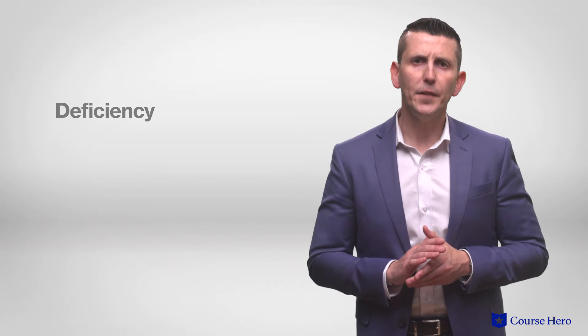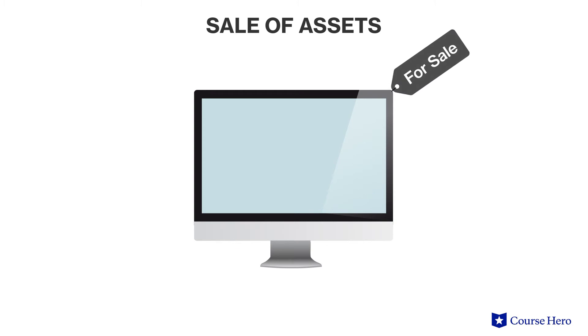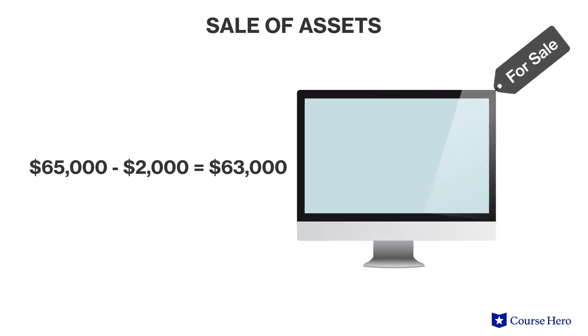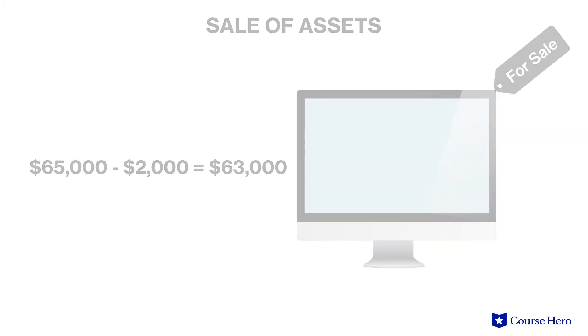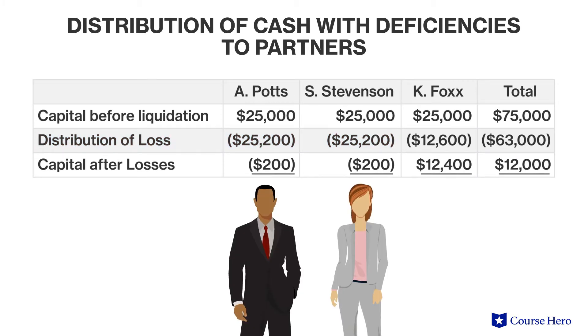There are situations in which a partner's capital account could end up negative, thereby triggering a deficiency. A deficiency is a claim that the partnership has against the partner. Assume the partnership sold its non-cash assets with a book value of sixty-five thousand dollars for only two thousand dollars, recognizing a loss of sixty-three thousand dollars. Since the loss allocated to Andy and Samantha each exceeds their twenty-five thousand dollar capital account balance, Andy and Samantha's capital accounts will end up with a two-hundred dollar deficit.